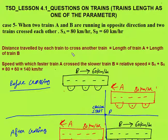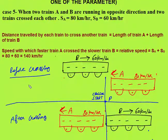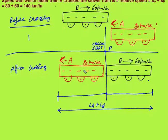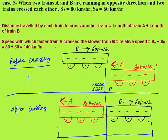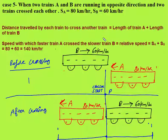Here is Case 5: when two trains A and B are running in opposite directions and the two trains cross each other. In diagram 1, crossing has not started — A is moving west at 80 km/h and B is moving east at 60 km/h, and crossing will start at point P. After crossing, train A reaches one point and train B another. The total distance traveled by the trains in crossing each other is length of train A plus length of train B, and the relative speed for opposite directions is 80 plus 60, equals 140 km per hour.